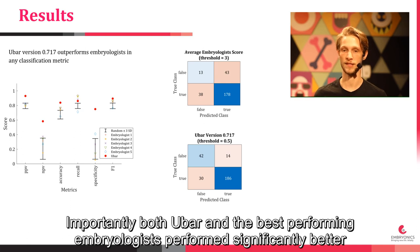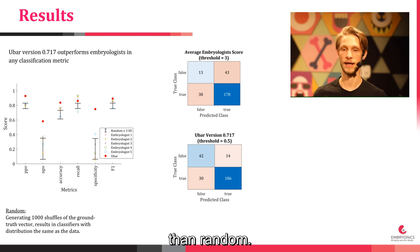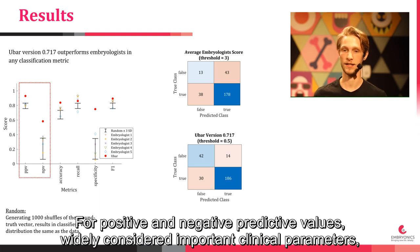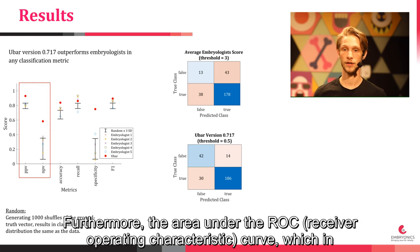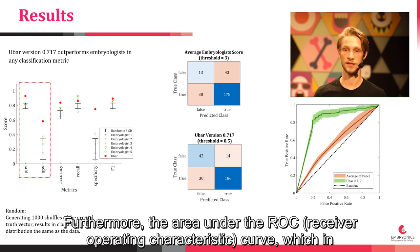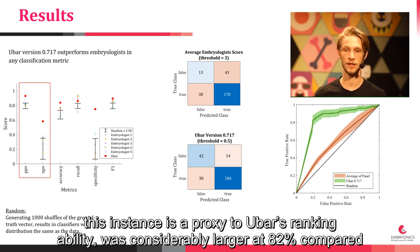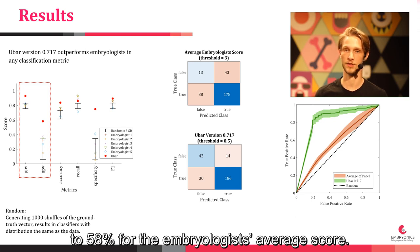Importantly, both UBAR and the best-performing embryologists performed significantly better than random. For positive and negative predictive values, widely considered important clinical parameters, UBAR improved on the panel's performance by 12 and 29% respectively. Furthermore, the area under the ROC curve, which in this instance is a proxy to UBAR's ranking ability, was considerably larger at 82% compared to 58% for the embryologist's average score.